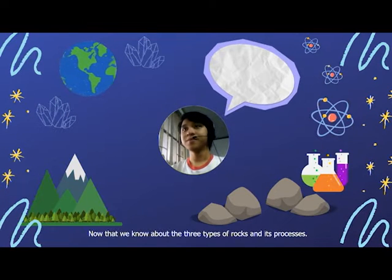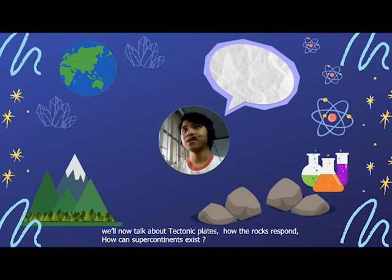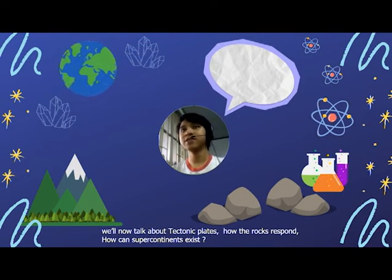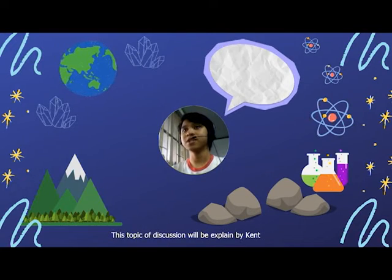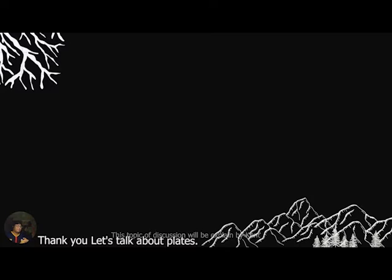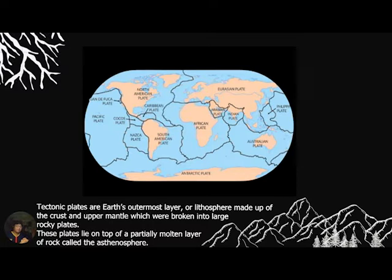Now that we've talked about the three types of rocks and their processes, we'll talk about tectonic plates — how rocks respond, how supercontinents can exist, and whether plates cause earthquakes and volcanoes. This topic will be explained by Ken. Let's talk about tectonic plates. Tectonic plates are Earth's outermost layer, the lithosphere, made up of the crust and upper mantle, broken into large, roughly rigid plates. These plates lie on top of a partially molten layer of rock called the asthenosphere.